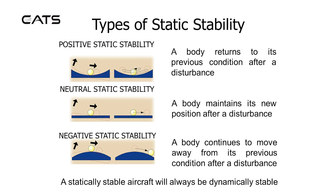Types of static stability: Positive static stability is when a body returns to its previous condition after a disturbance. Neutral static stability is when a body maintains its new position after a disturbance. Negative static stability is when a body continues to move away from its previous condition after a disturbance.